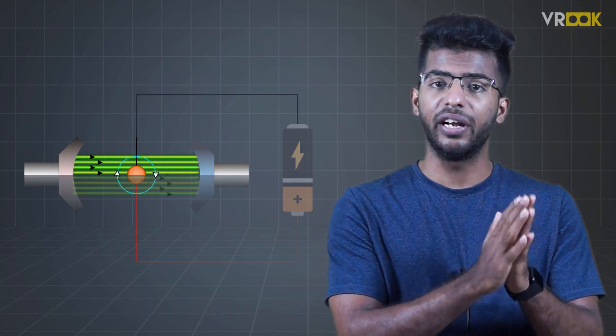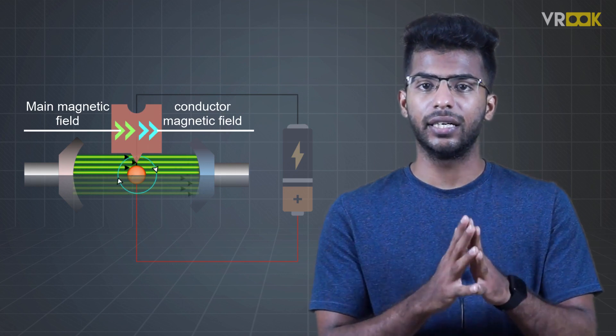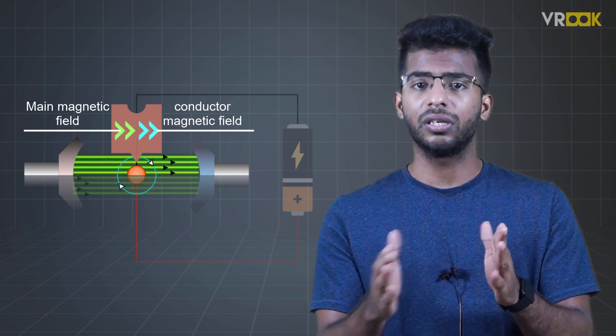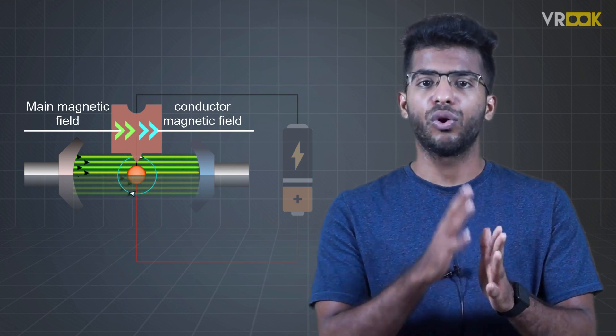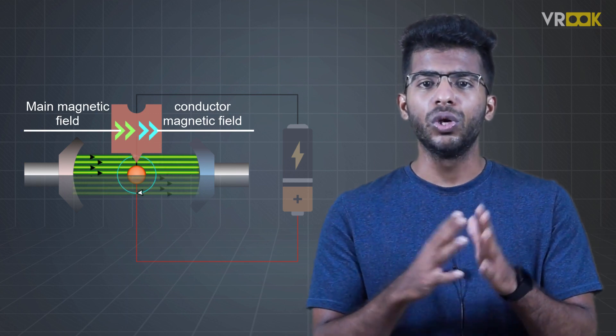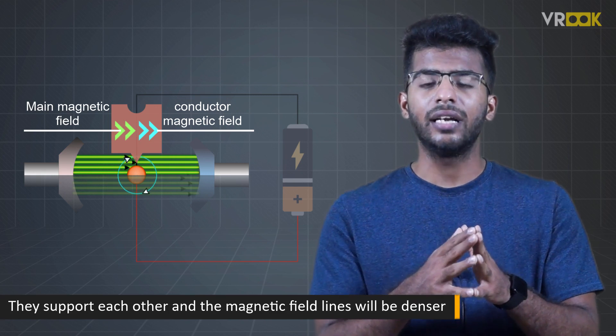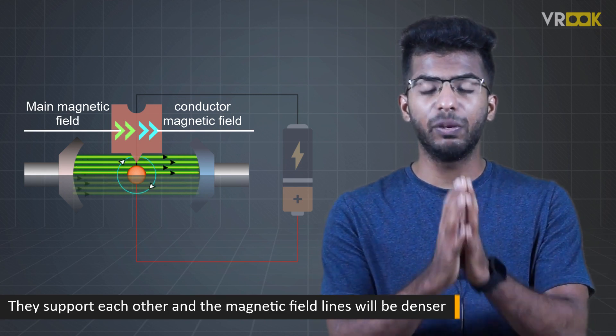The upper half of the magnetic field due to the current carrying conductor will be in the same direction as that of the main magnetic field. That's from right to left. So, they support each other and the magnetic field lines will be denser.